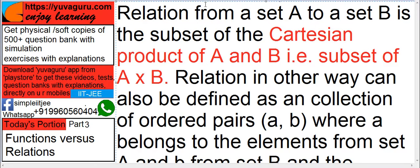Then, relation from a set A to set B is a subset of Cartesian product of A and B. That is subset of A cross B. Let's understand Cartesian first.